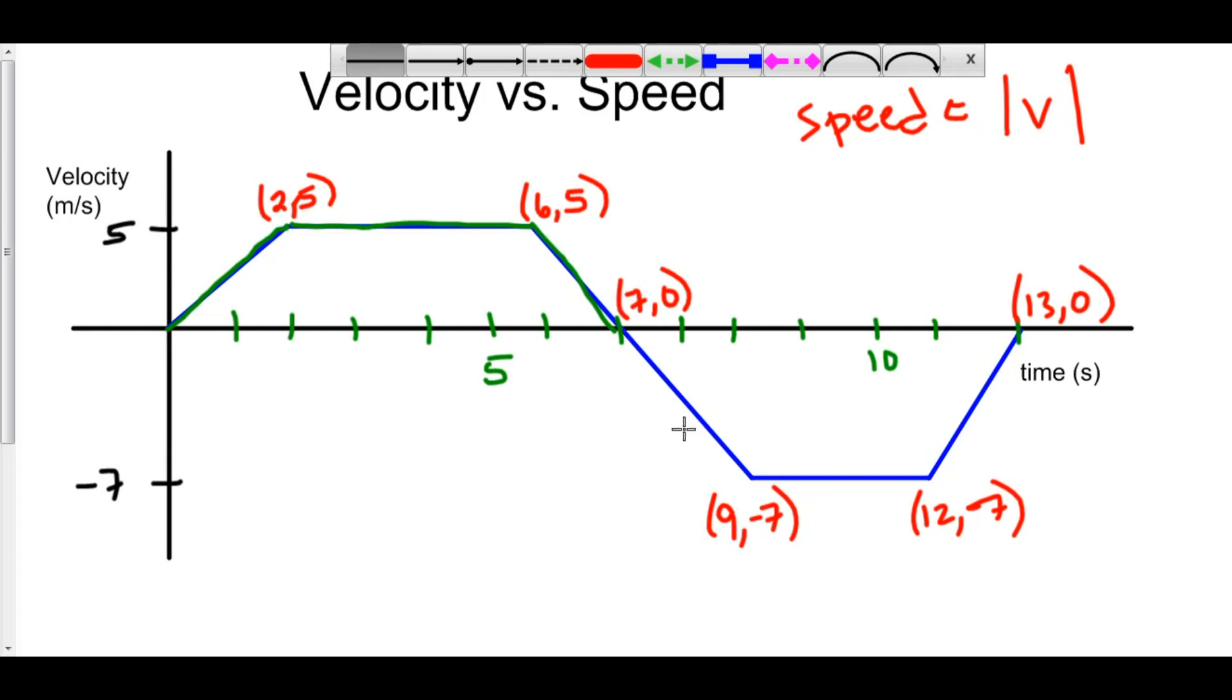However, after time t equals 7, when our velocity becomes negative, speed is the absolute value of velocity. So, everything there gets flipped about the x-axis. And this is what the speed would look like right here.